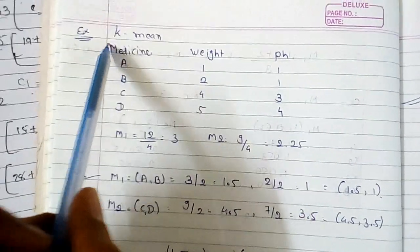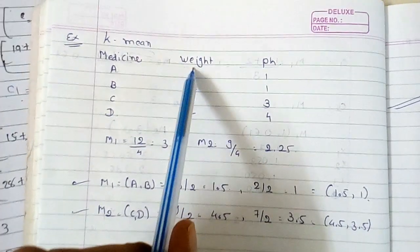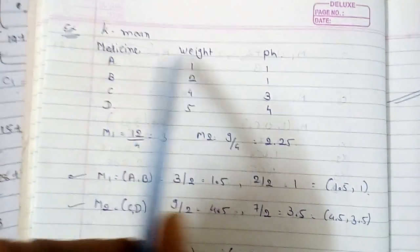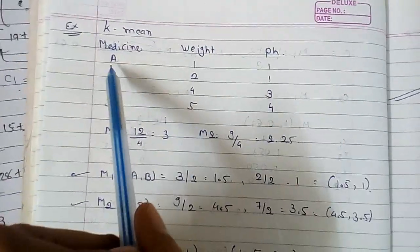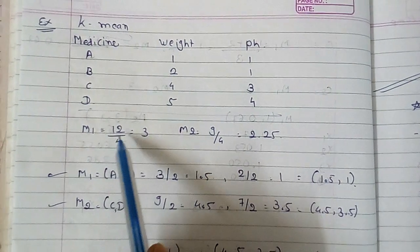In this video we will discuss k-means algorithm for the data given in terms of dimensions like weight and pH. So what you have to do first of all is find out m1 and m2.